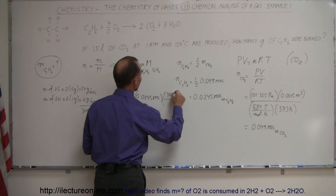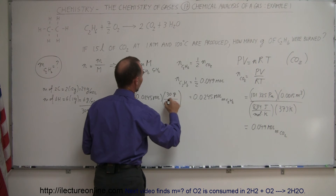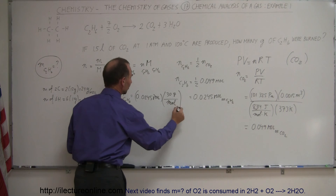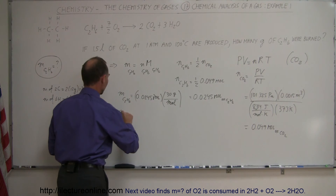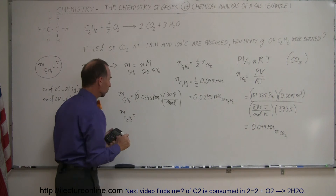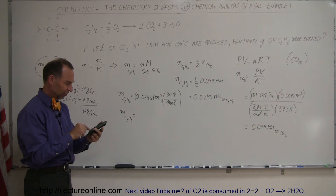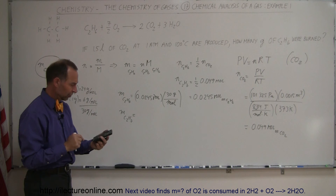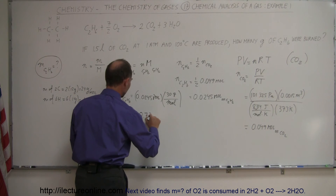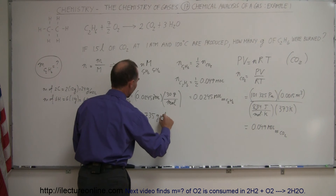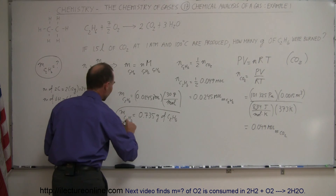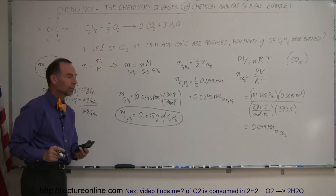We want 30 grams per mole. The moles cancel out, and we multiply 0.0245 times 30 — so the mass of C2H6 is equal to 0.735 grams of C2H6. There we go — that's how we do that.